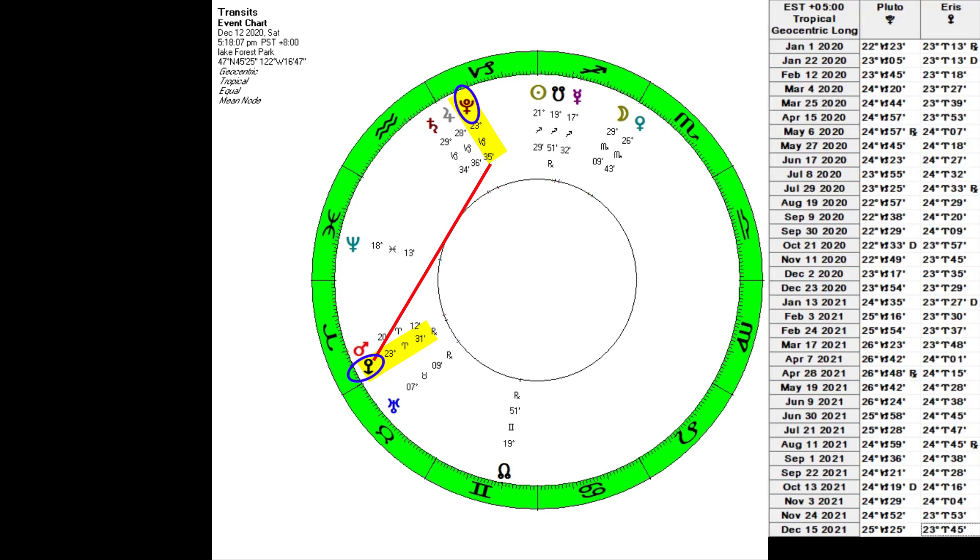Eris and Pluto make their first square in early 2020, and they are just now making the second square. The final time they will be 90 degrees from each other will be 2021, from late summer to well into the fall. If we are talking about getting beyond the COVID pandemic in a way that feels truly tangible, I am betting that is when it will be.